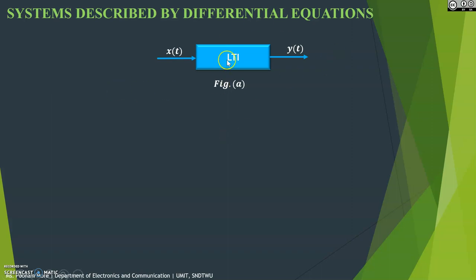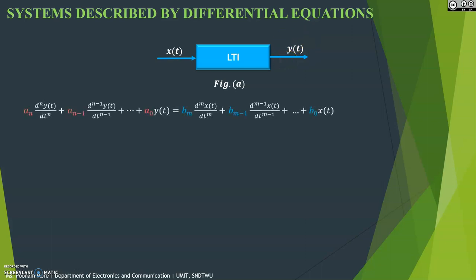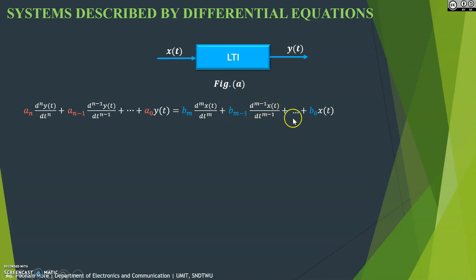Consider a continuous-time domain system to which x(t) is applied as an excitation, for which it provides the response y(t). The standard differential equation can be represented as: a_N times the Nth derivative of y(t) plus a_(N-1) times the (N-1)th derivative of y(t), up to a_0 times y(t), equals b_M times the Mth derivative of x(t) plus b_(M-1) times the (M-1)th derivative of x(t), up to b_0 times x(t). Here, a_N, a_(N-1), ..., a_0 and b_M, b_(M-1), ..., b_0 are nothing but constant coefficients of the system.